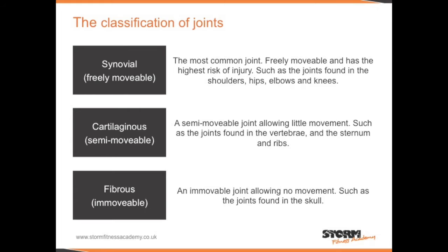Cartilaginous joints are semi-movable, allowing little movement. These are found in the vertebrae, sternum, and ribs. Fibrous joints are immovable, allowing no movement.